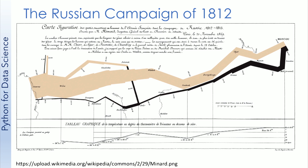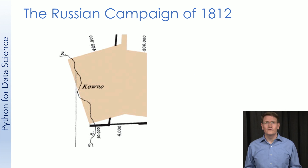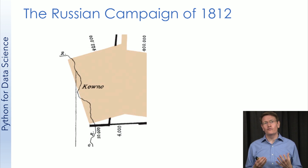In orange you have the French army as it advanced from the crossing of the Neman River towards Moscow. In black you have the French army in retreat. The width of the line depicts the size of the army. You can zoom in to the Neman River where you'll find the army's size at the start and the end of the campaign, and you can see almost instantly how disastrous the invasion of Russia was for the French.